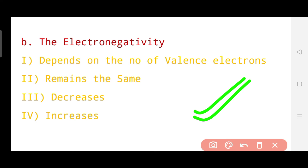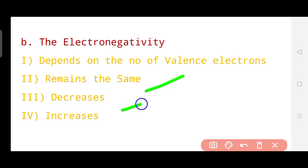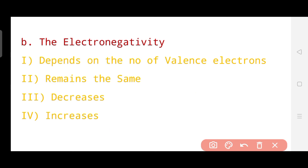The second sub-question is about electronegativity. Whether the electronegativity depends on the valence electron, remains the same, decreases, or increases when moving from left to right across a period. The correct answer is option four — it increases. So electronegativity increases across a period. Now let's see question number c.